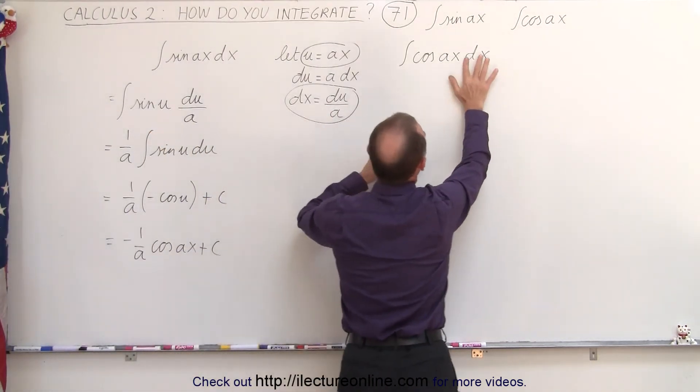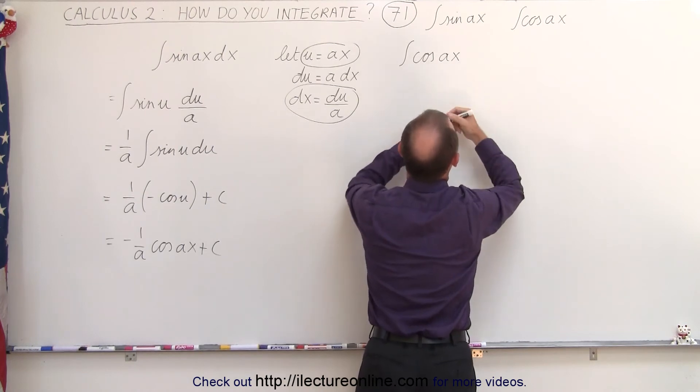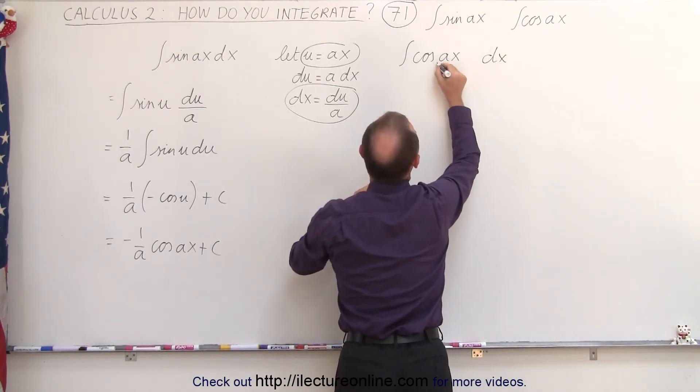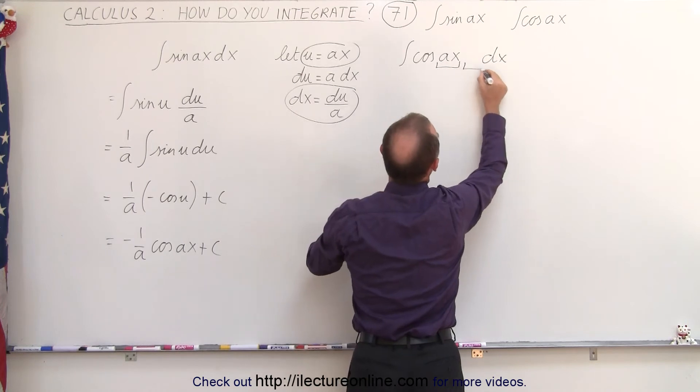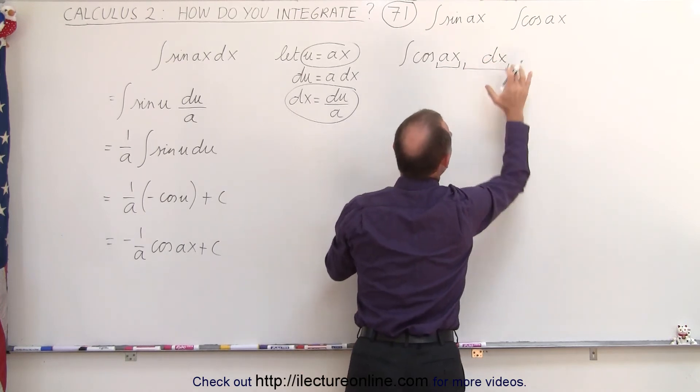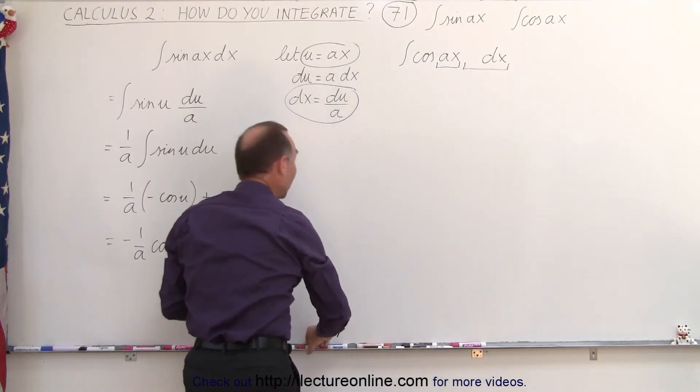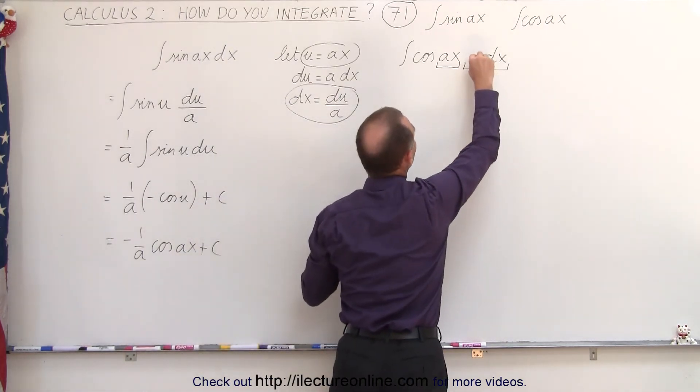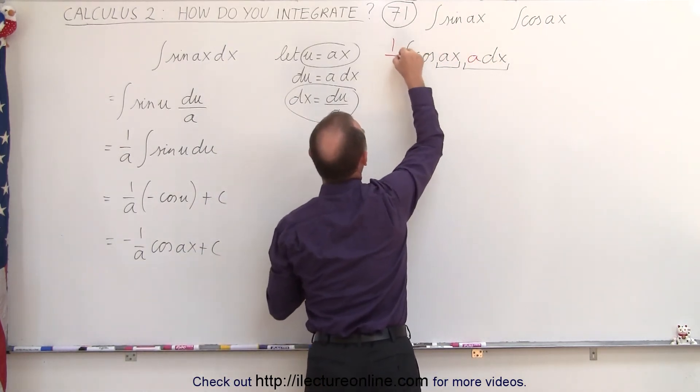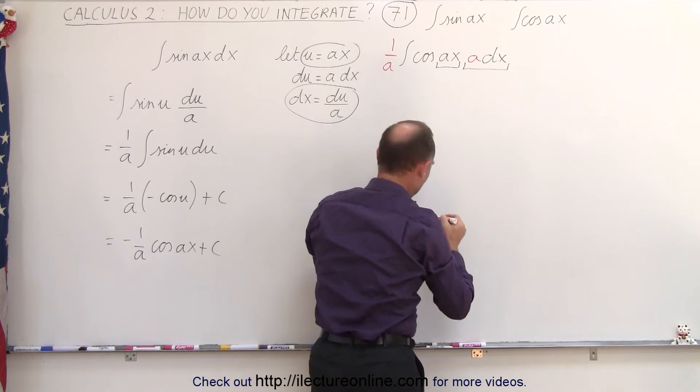we have an Ax here, so we're going to take this, move it over a little bit, which means if we have an Ax, we need a proper differential, which would be A dx, and I'm missing the A. So I'm going to multiply this by A and divide by A.